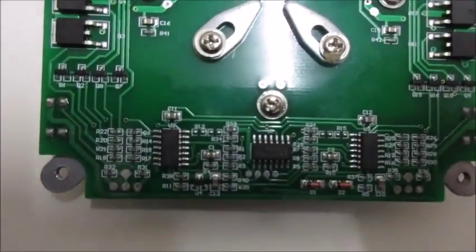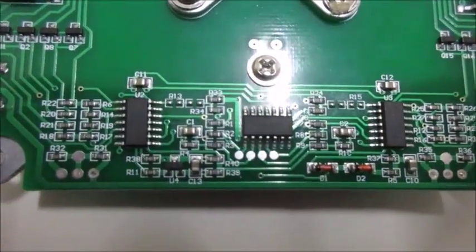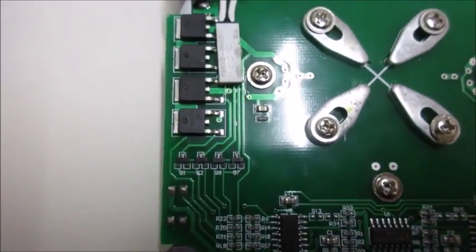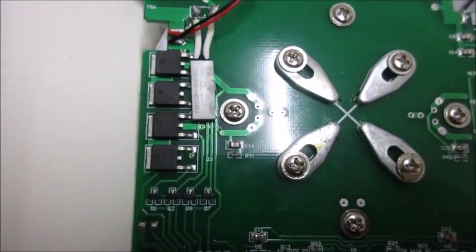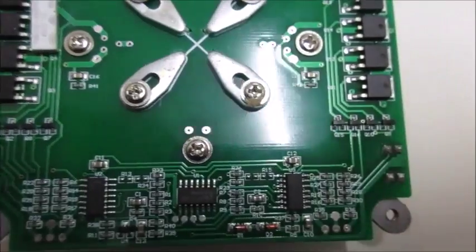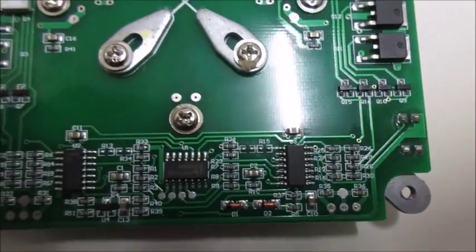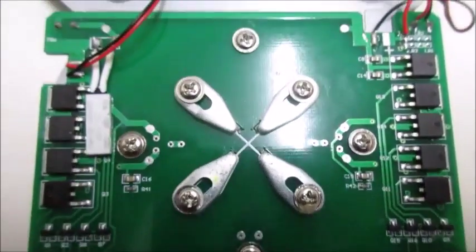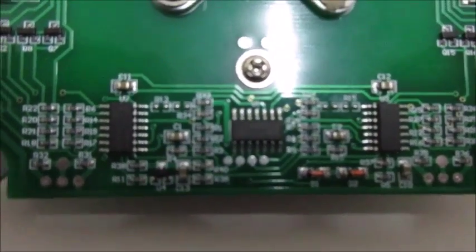Here's the bottom side of the circuit board. Got two transistors for each coil, and what these ICs are, I don't know. I'll get a close-up picture.